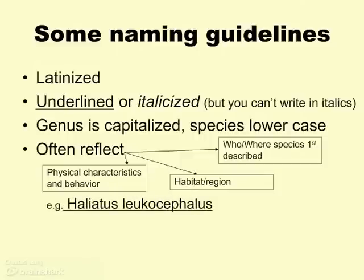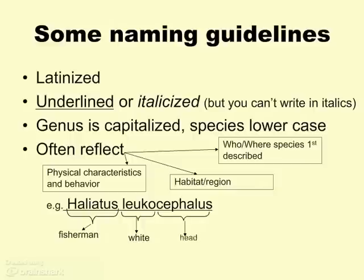Here's a classic example. We've got Haliaeetus leucocephalus. Halite is what you spread on your driveway when there's a little sleet out there, and Haliaeetus refers to a fisherman — like in the ocean. Leuco, of course, is white, and cephalus refers to head. So who is the fisherman with the prominent white head? That is the bald eagle.